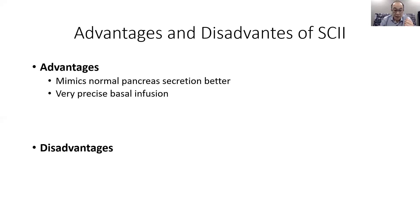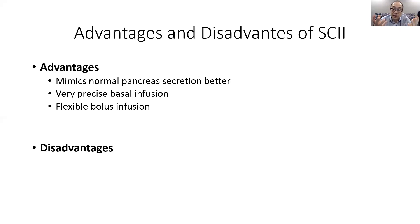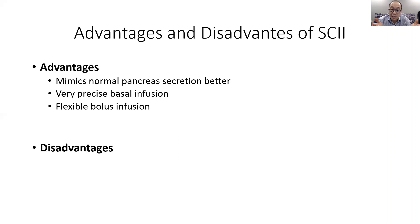Another advantage is flexible bolus infusion. These pumps usually have a bolus calculator built in to help patients figure out how much insulin to take. You can also do a square wave bolus, which delivers the bolus over a longer period — useful for a very high fat or very low glycemic index meal. A regular bolus might cause a low before all the food is digested, but a square wave bolus spreads the insulin over minutes to hours to match the slowed digestion and keep blood sugars better controlled.